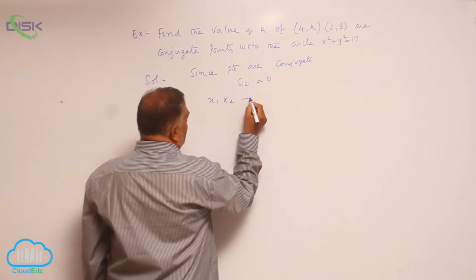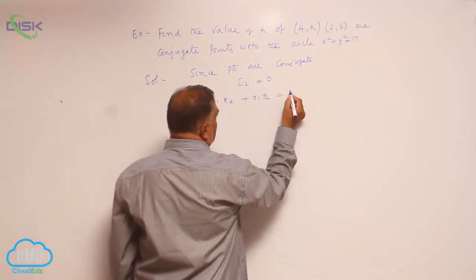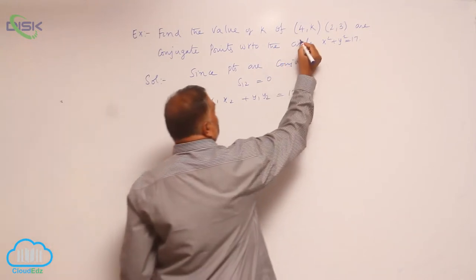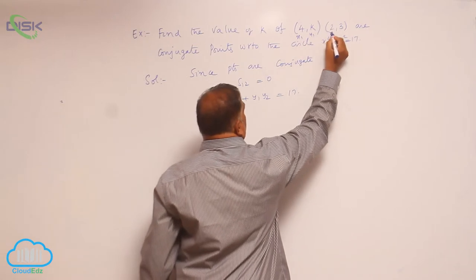x₁x₂ + y₁y₂ = 17. Now, this is x₁y₁, x₂y₂.